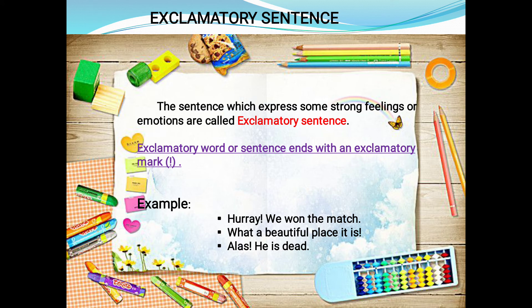Exclamatory sentences express strong feelings or emotions. For example, if you win a competition you feel very happy and excited — that is a feeling. If your mom or teacher scolds you for not doing homework, you feel sad — that is also a feeling. The sentence which shows feeling and emotion is called an exclamatory sentence. Exclamatory sentences end with an exclamation mark. Example: 'Hooray! We won the match.' 'Hooray' is the exclamatory word, so after it we give an exclamation mark, and at the end of the sentence we give a full stop.